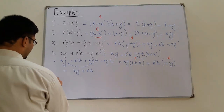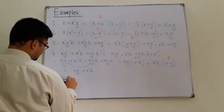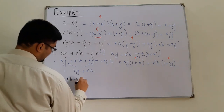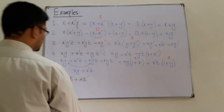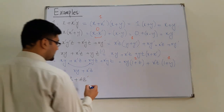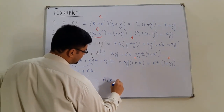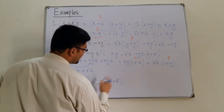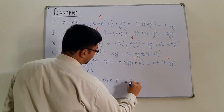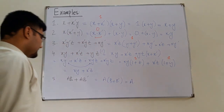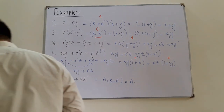Example 5: a b plus a b complement. Taking a common: a into (b plus b complement). b plus b complement is 1, so this is again equal to a.